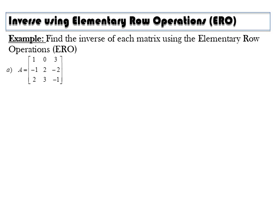Now we will find the inverse using elementary row operations (ERO). We will write in the form of A and the identity matrix [A|I], and we will perform the ERO until we get I and also the inverse on the right.